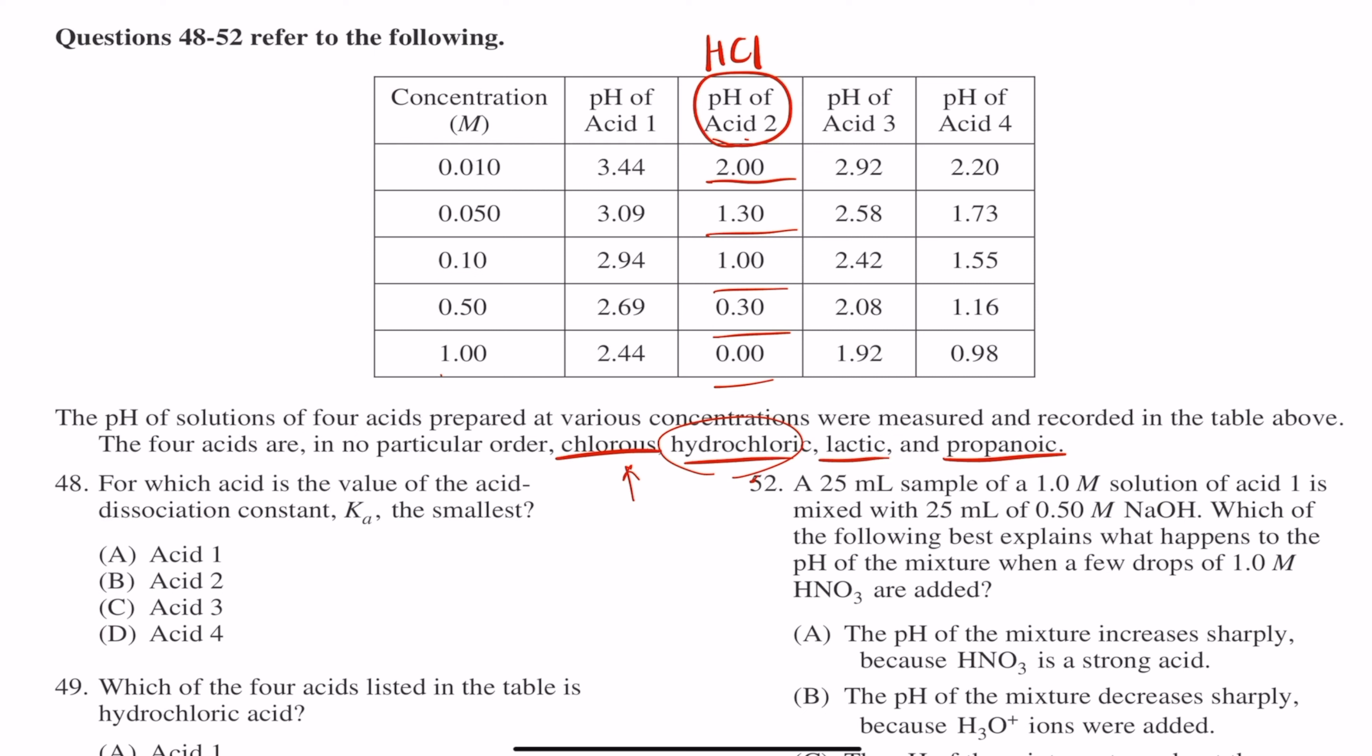Now, remember, people, chlorous acid is HClO2, and that's not a strong acid, right? HClO4 and HClO3, those are strong acids, but HClO2 is not a strong acid.